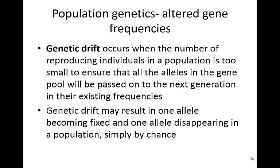Genetic drift can occur when the number of reproducing individuals in a population is too small to ensure that all the alleles in the gene pool will be able to be passed on to the next generation, at least in their existing frequencies. Genetic drift may result in one allele becoming fixed and one allele disappearing in a population, so that all of the population would then have just one type of the allele — they would all be homozygous for a particular trait.